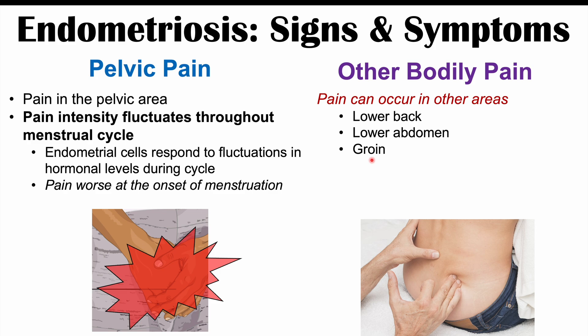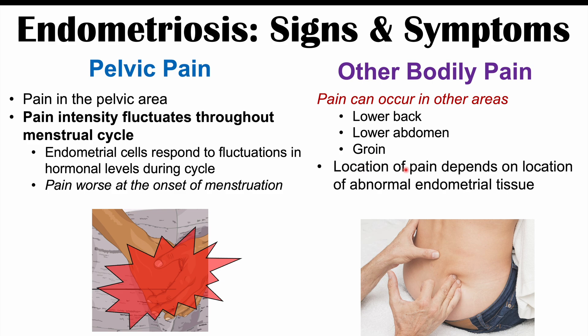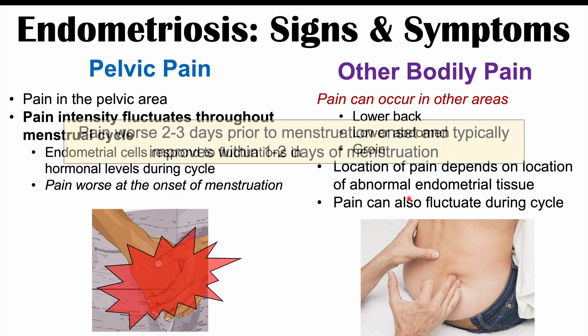As mentioned, this endometrial tissue can be in different surrounding structures in the pelvis and lower abdomen, which can cause this pain. The location of the pain depends on the location of the abnormal endometrial tissue. And like the pelvic pain, this other pain can fluctuate during the cycle as well.